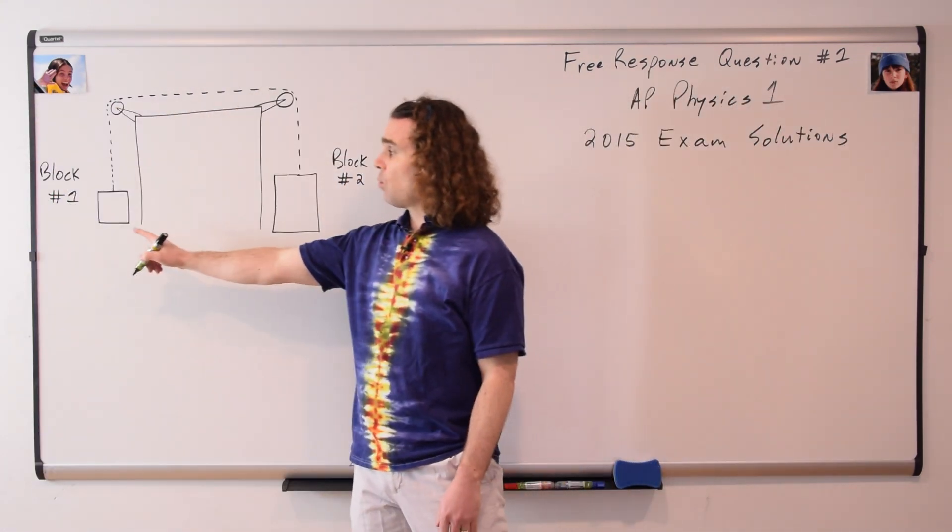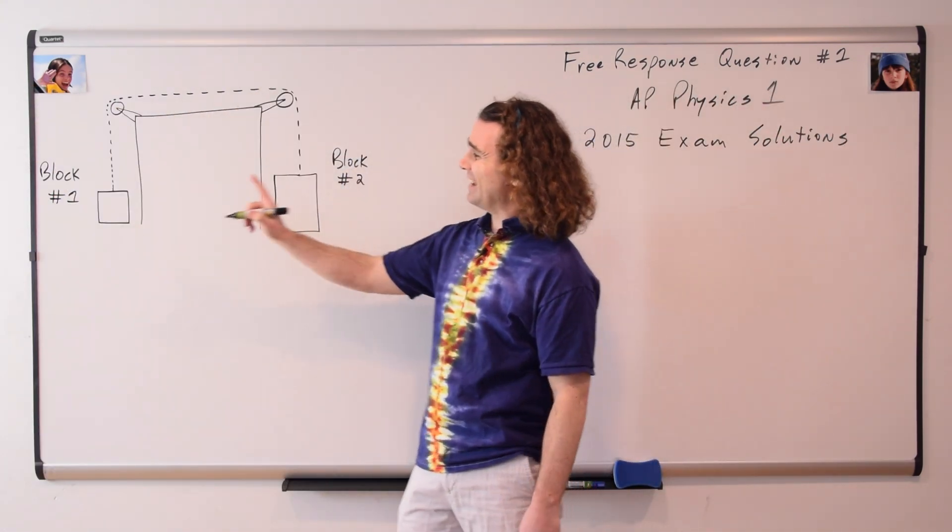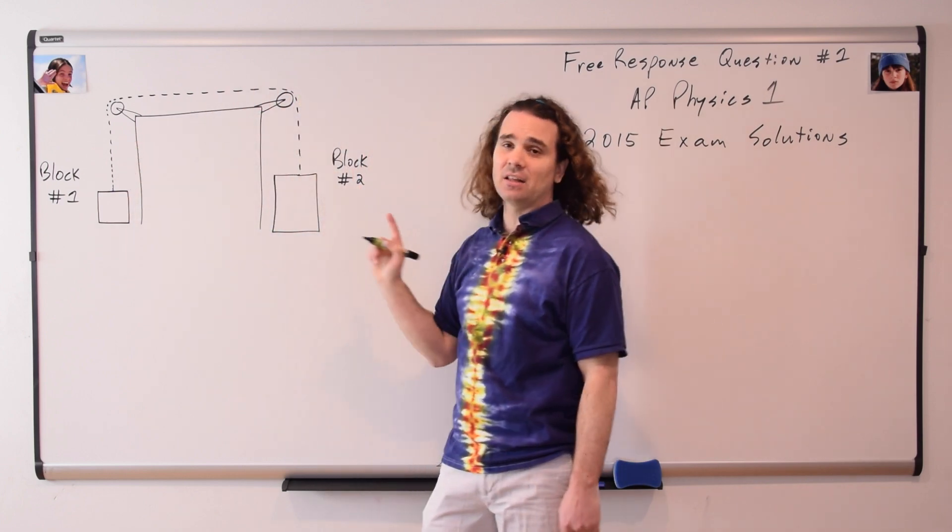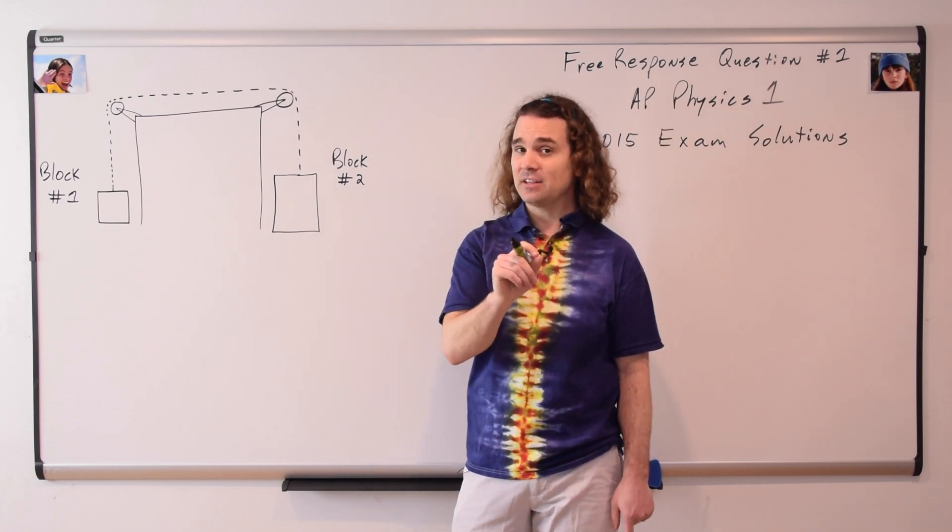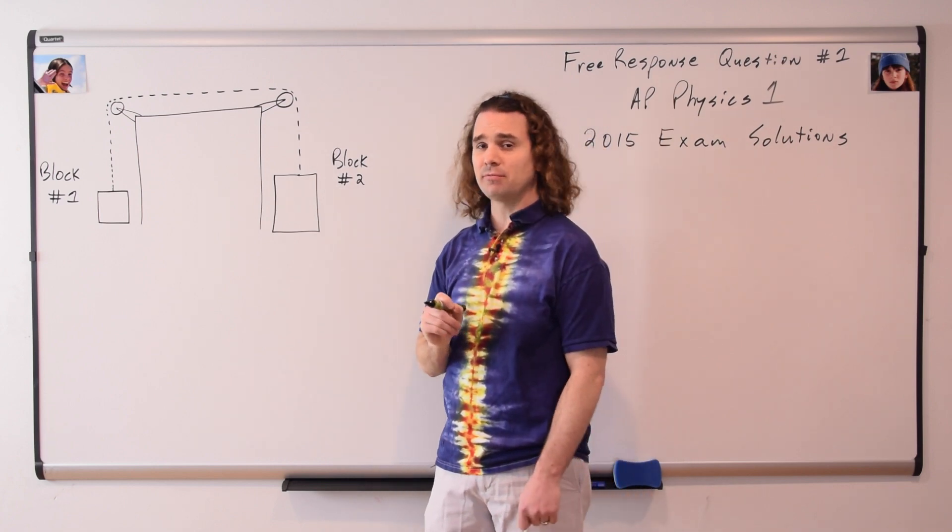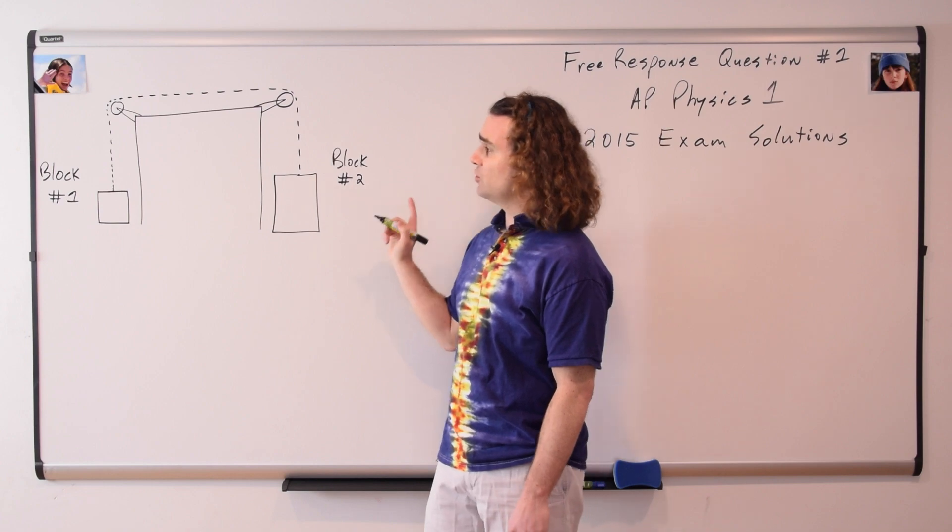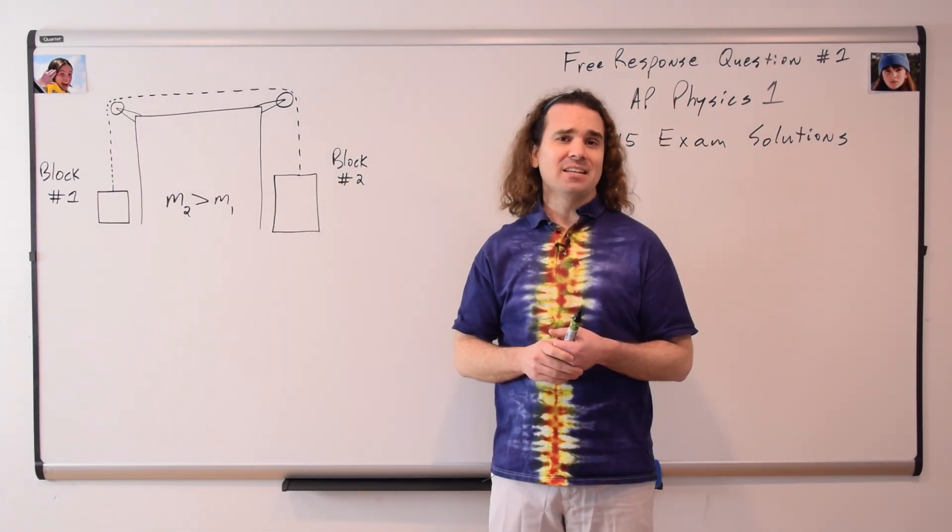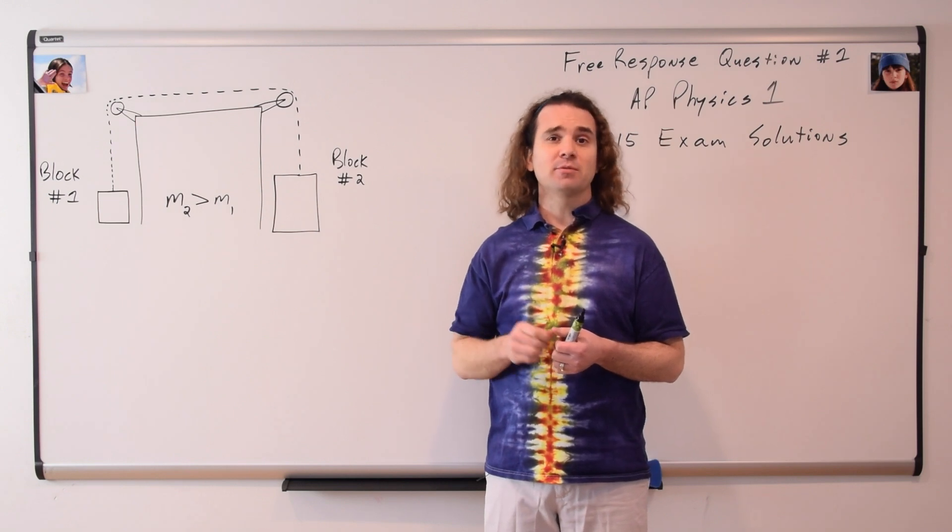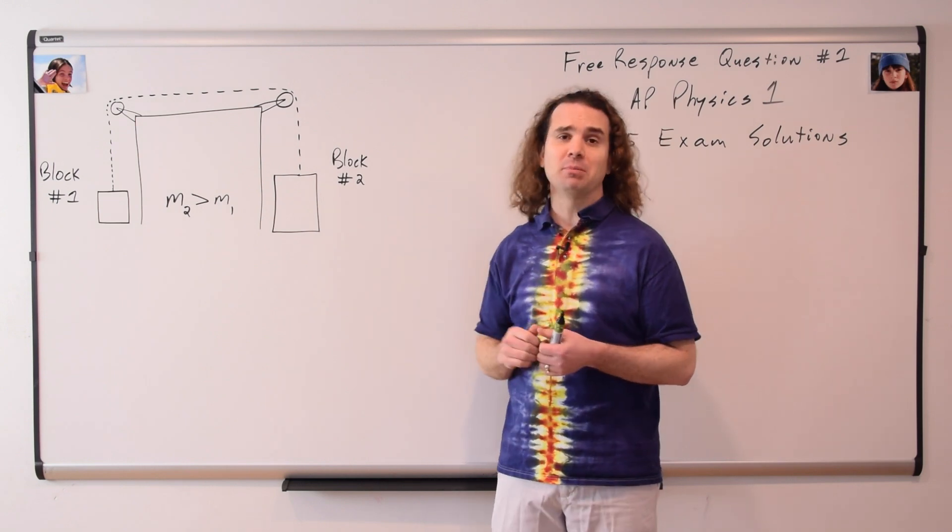We have block one and block two connected by a string of negligible mass. That string goes over two pulleys. Those pulleys have negligible mass and negligible friction, and the mass of block two is greater than the mass of block one. Part A asks us to draw the free body diagrams for the forces acting on each block.